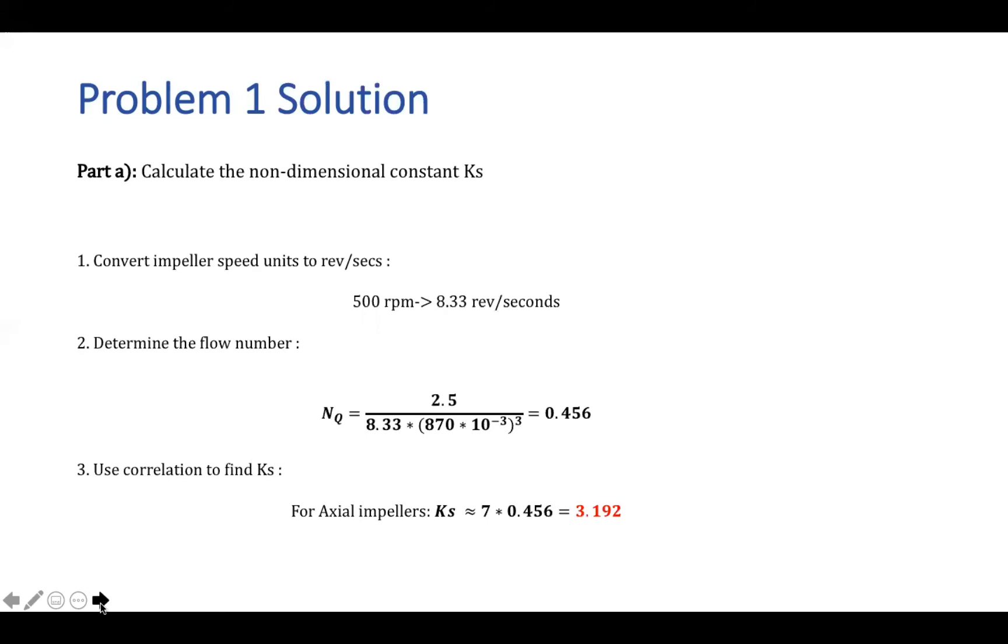So we hope you guys got a chance to try to tackle the problem. This problem wasn't too bad. So the first step was to calculate the non-dimensional constant Ks. So the first step should be to convert the impeller speed from RPM to units per second. So this can be done easily by just converting the time units. Next, the next step should be to determine the flow number. And by this, we just use the provided equation and it's pretty much plug and chug from there. And you should have got a value of around 0.456. And then the last step should be to use the correlations to find Ks. And from the worksheet, we see that for actual propellers, the Ks is equal to seven times the flow number. So this should have given you a final answer of around 3.192.